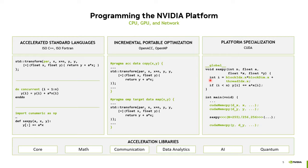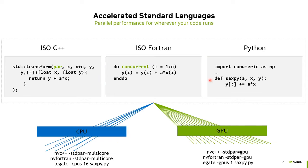Our goal is to provide accelerated standard languages as a way to write your code once and expect it to run everywhere. Depending on the compiler flag, the compiler understands whether to build for a CPU using coarse-grained threads or for a GPU using fine-grained threads, and the code itself remains the same.